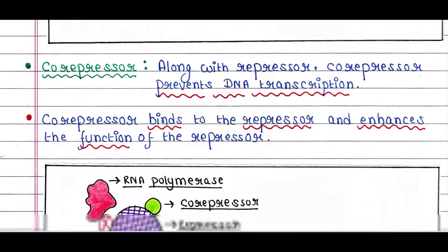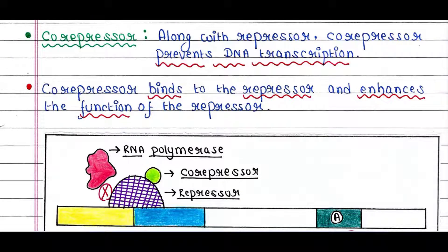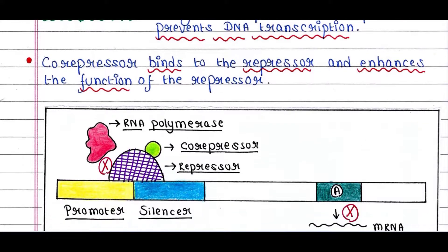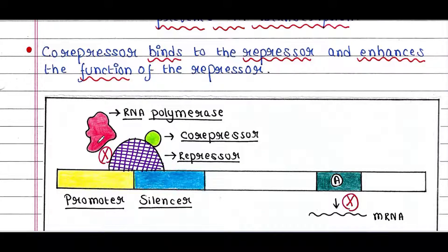Next is the co-repressor. Along with the repressor, the co-repressor prevents DNA transcription. The co-repressor binds to the repressor and enhances the function of the repressor, and hence RNA polymerase is not able to bind the promoter and transcription doesn't occur. Again, this is exactly the same as what we have seen in prokaryotes.